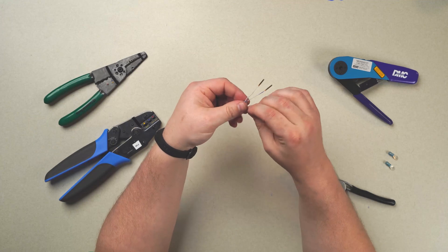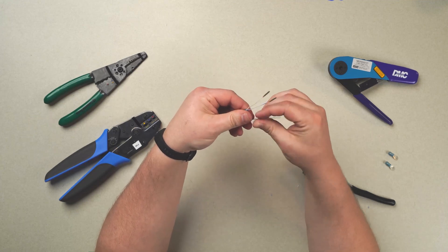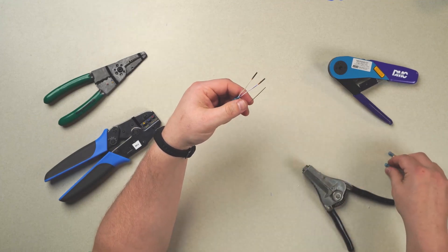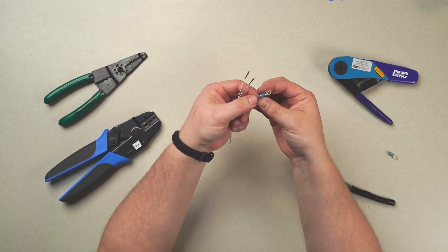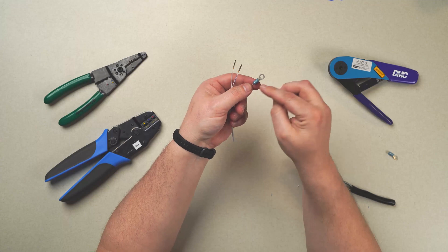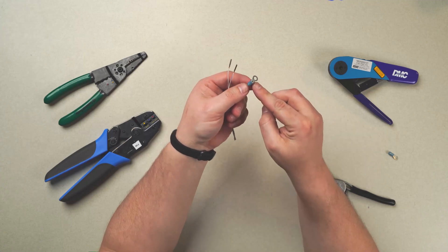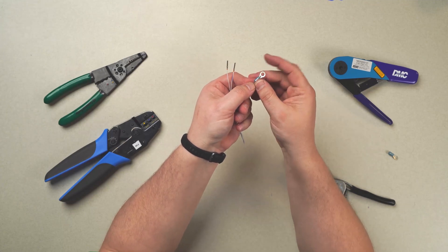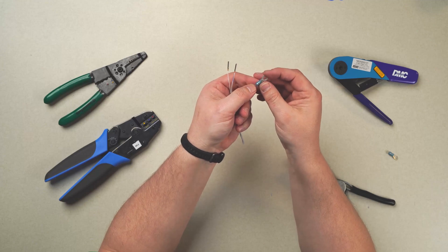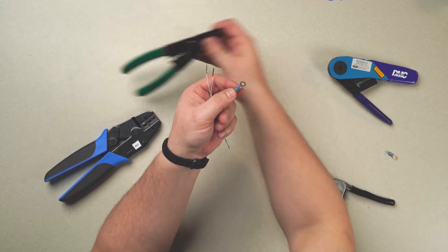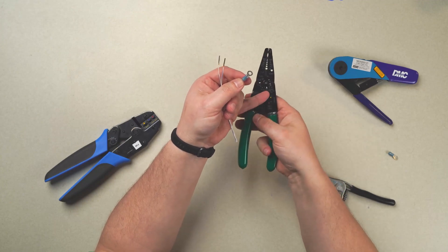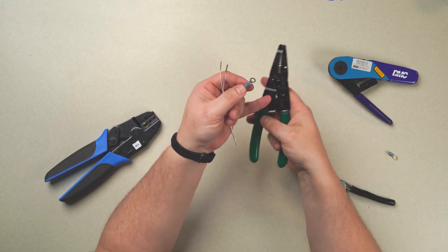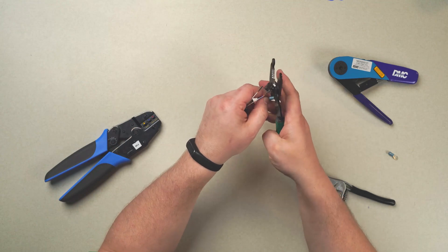Next, let's go ahead and crimp on our shield termination. First off, we're using the appropriate size. We want to make sure that we see exposed shield through the actual ring terminal itself. You see it goes all the way through. And we essentially have two options available. We have the hardware store option, which we'll utilize. This is a blue sleeve. We'll utilize the blue crimping position.